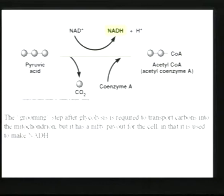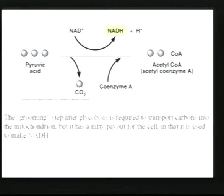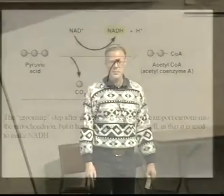Two reasons the cell does this: reason one, it generates an NADH; reason two, this is the only way you get acetyl groups into the mitochondrion — you must attach coenzyme A to them. That's how the mitochondrion recognizes and transports them in. So two reasons: it generates an NADH, and you must transport acetyl groups into the mitochondrion.